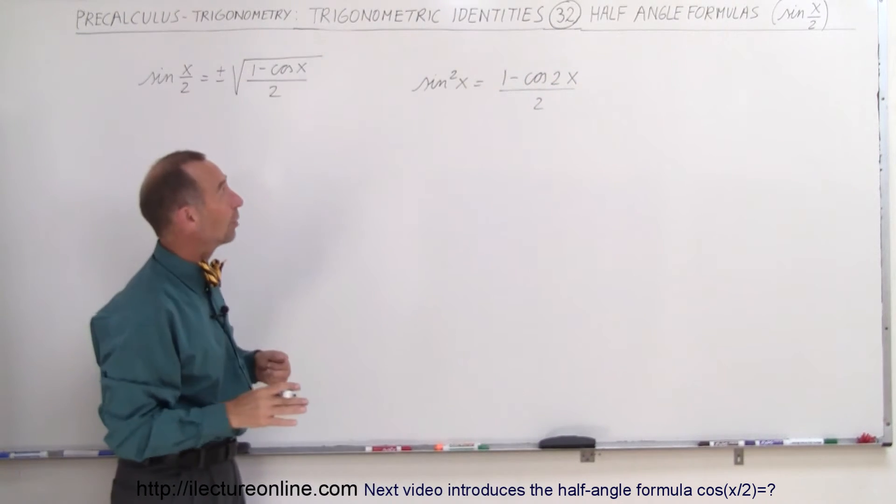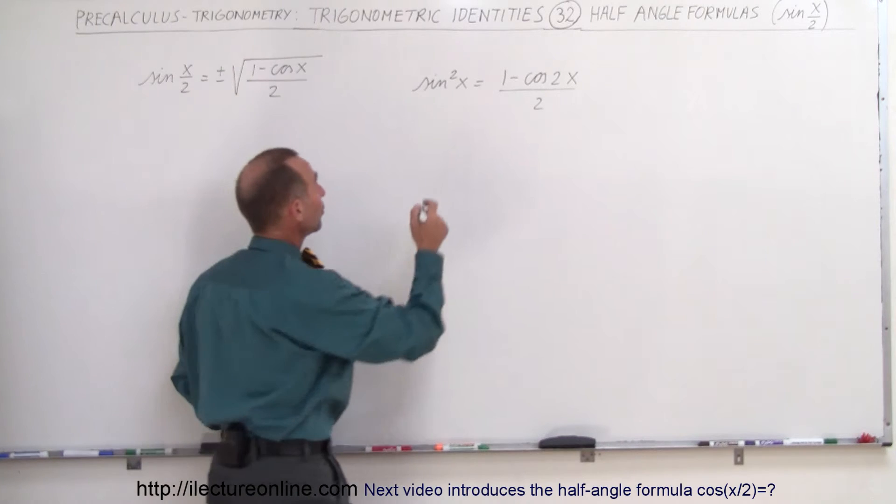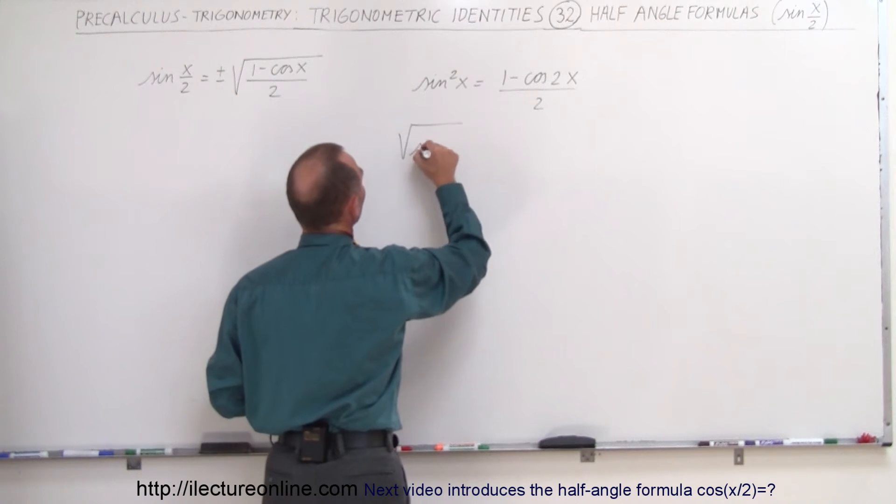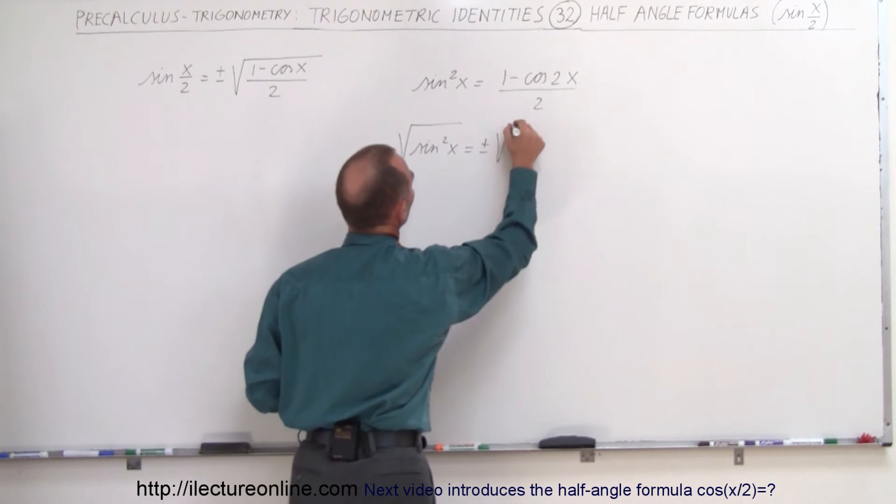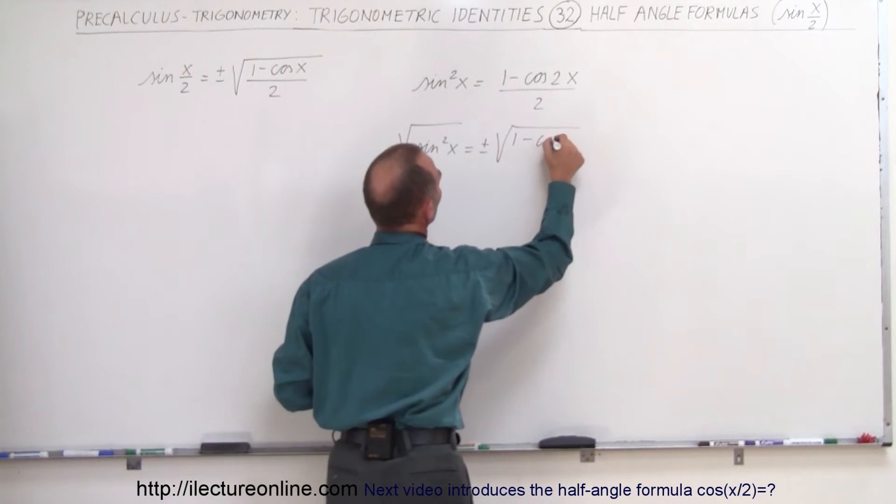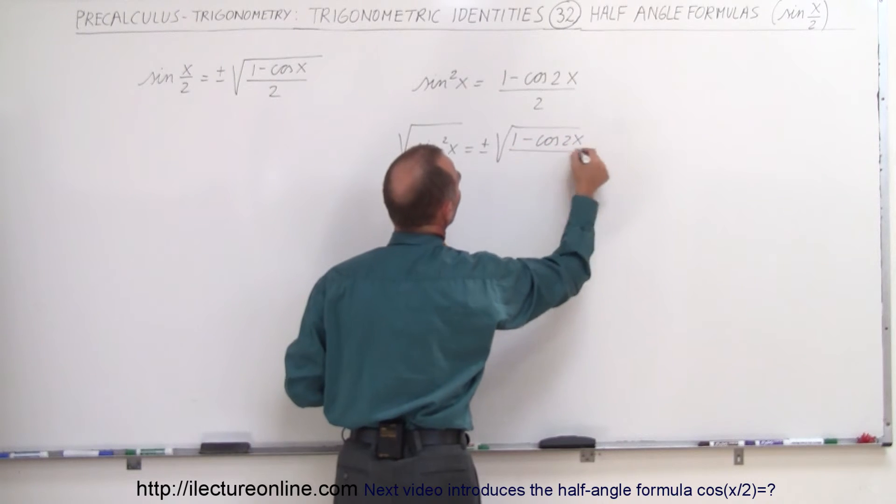So what we can do here is we take the square root of both sides. If we do, the square root of sine squared of x should equal plus or minus the square root of 1 minus the cosine of 2x divided by 2.